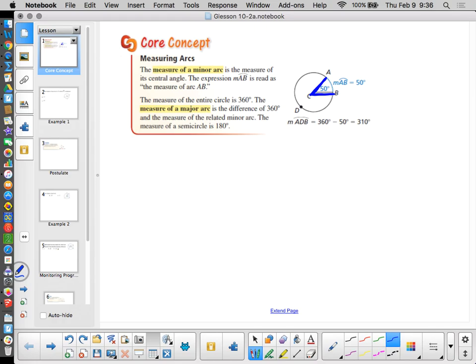And the measure of the arc is the same as the measure of the central angle. Now, minor arc versus major arc. Minor, the measure is less than 180, and we name with two letters, which are the end points of the arc. And here we'd say AB. And notice we use the arc symbol for arc AB.